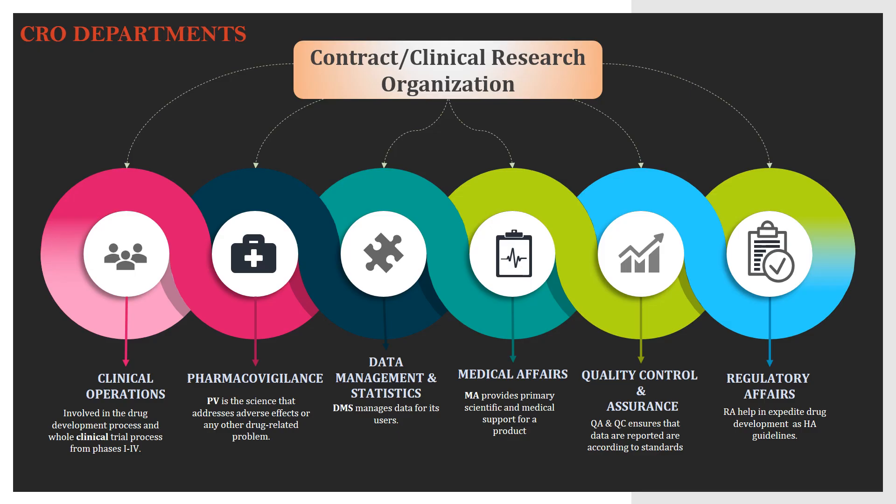The Contract Research Organization (CRO) plays an important role in the pharma industry. Key CRO departments include: Clinical Operations, which manages the drug development process from end to end, Phase 1 through 4; Pharmacovigilance (PV), the science addressing adverse effects and drug-related problems; Data Management and Statistics, managing and processing data; Medical Affairs, providing scientific and medical support for products; QA and QC, ensuring data is reported to standards; and Regulatory Affairs, expediting product development per health authority guidelines.